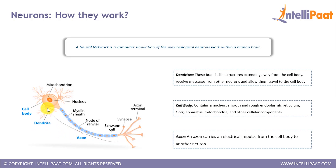The dendrites receive the signals, the cell body processes these signals, and the axon finally sends out these signals to other neurons. Just like the biological neuron, the artificial neuron has a number of input channels, a processing stage, and one output that can fan out to multiple other artificial neurons.